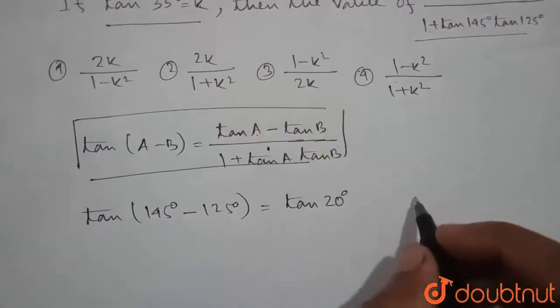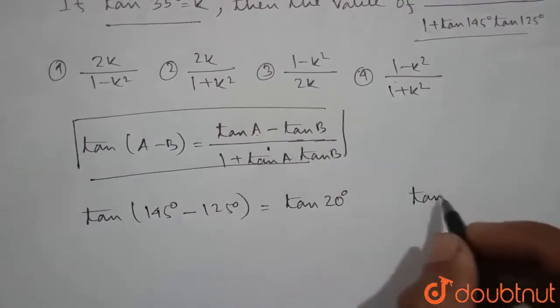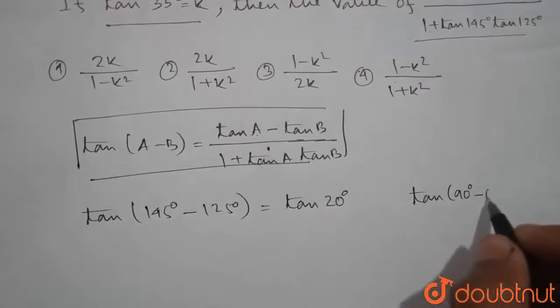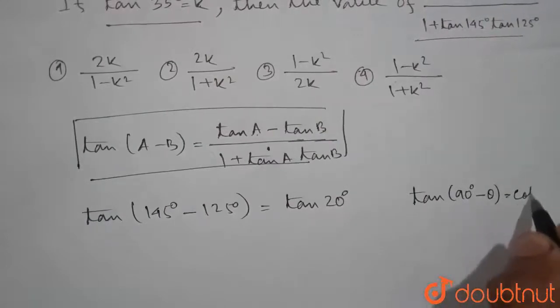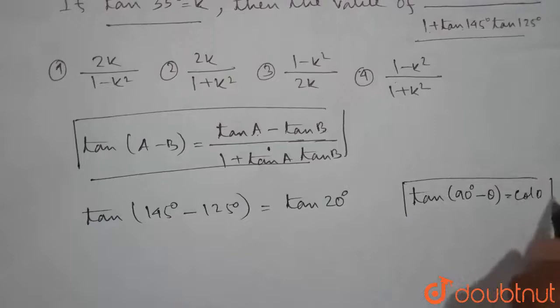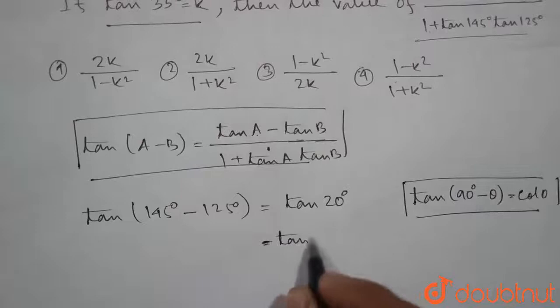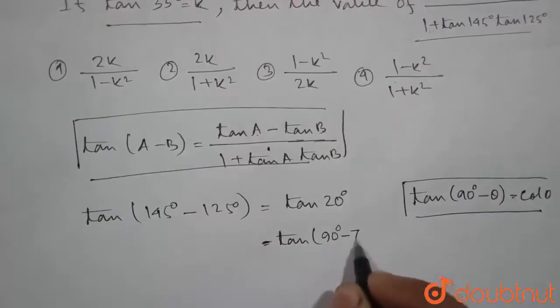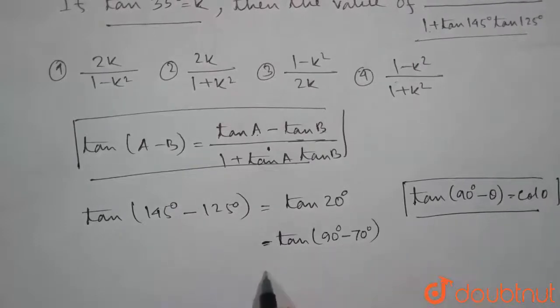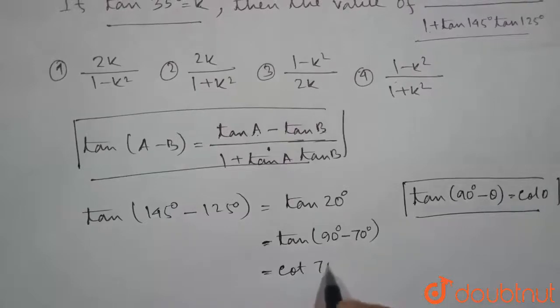Again, we know that tan of 90 degrees minus theta is equal to cot of theta. So we can write tan of 20 degrees as tan of 90 degrees minus 70 degrees, which is equal to cot of 70 degrees.